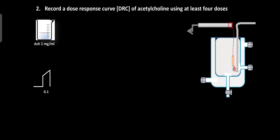After the washing period, record the baseline, then administer 0.2 ml of acetylcholine and record the responses for 90 seconds. After 90 seconds, stop the drum, change the Ringer's solution, and the lever returns to its original position. After the next washing period, record the baseline again, then administer 0.4 ml of acetylcholine solution and record the response for 90 seconds. After that, stop the drum and wash the tissue 2 to 3 times, record the baseline, add 0.8 ml of acetylcholine solution, and record the responses for 90 seconds.